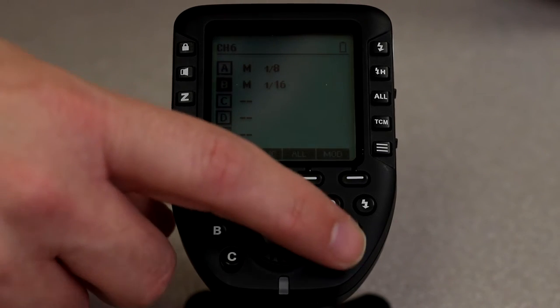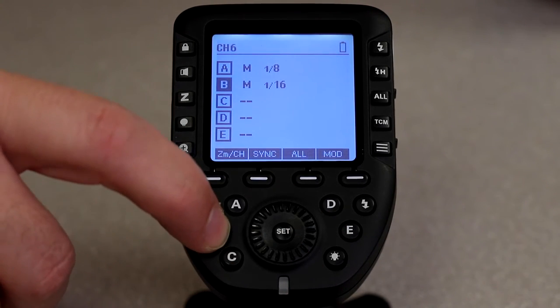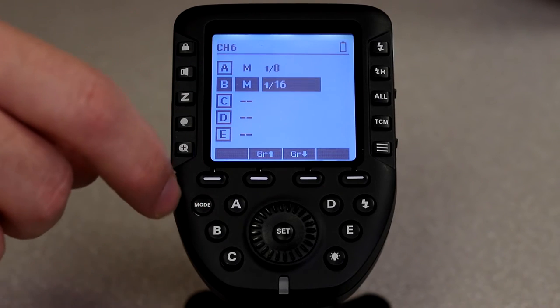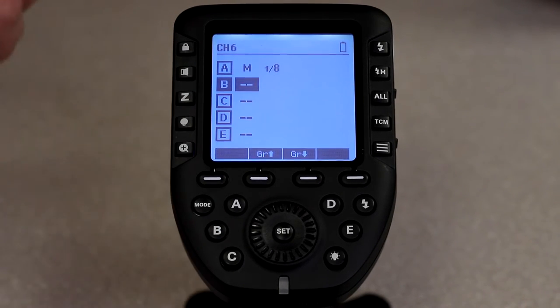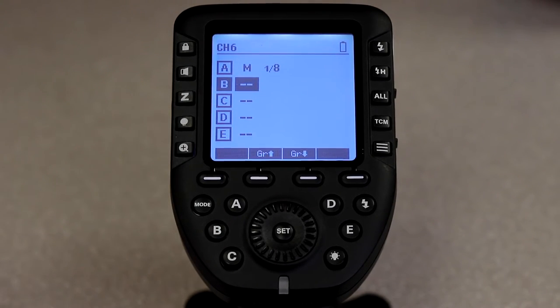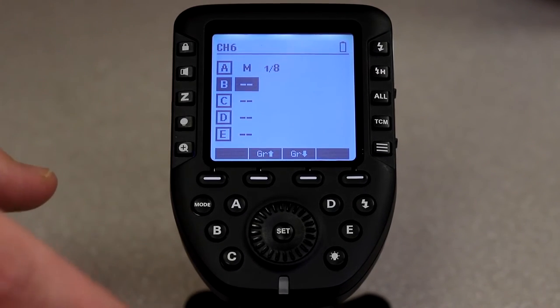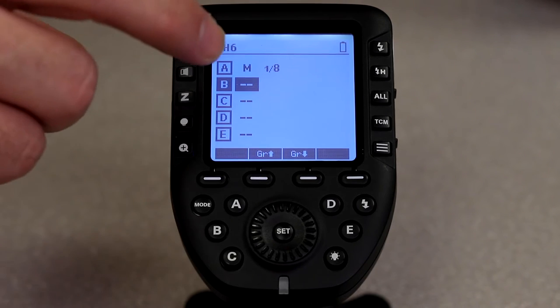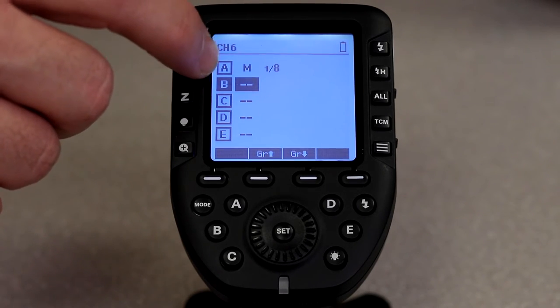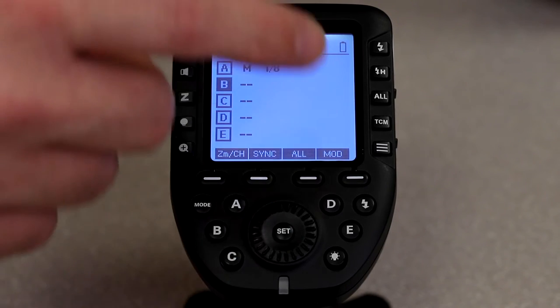So I take a couple pictures and I decide, you know what, I don't need that hair light. I can come in here to B, click it, and then hit mode and just turn it off completely. Now that flash will still be on, but it won't pop whenever I take a picture because I've told it to only talk to that flash that's on group A.